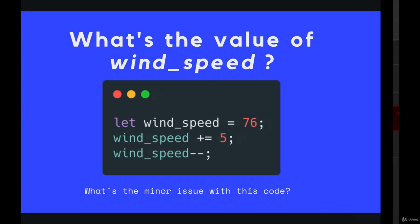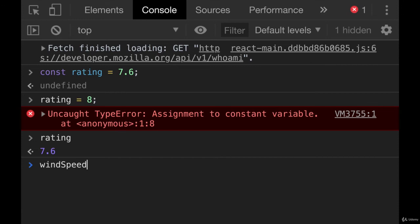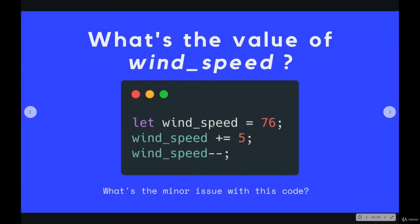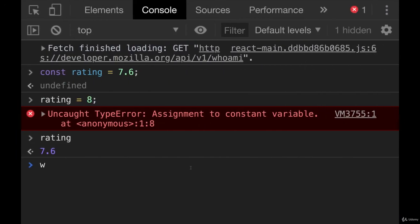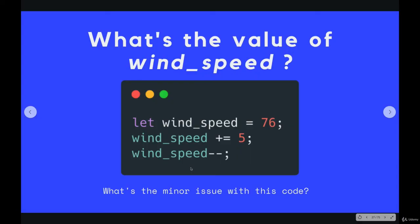So ideally, this would be named windSpeed like this. windSpeed, camel cased, first letter lowercase. It doesn't break anything to do it this way with the underscores. Well, it breaks the hearts of JavaScript developers around the globe, but it is valid code. And that's it. Nice little short quiz.